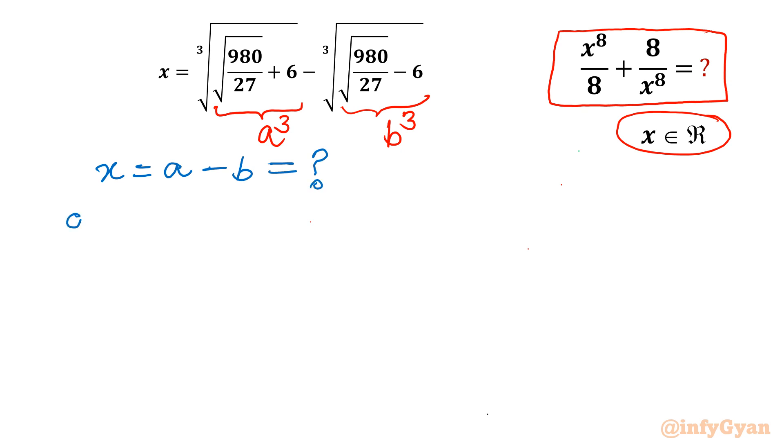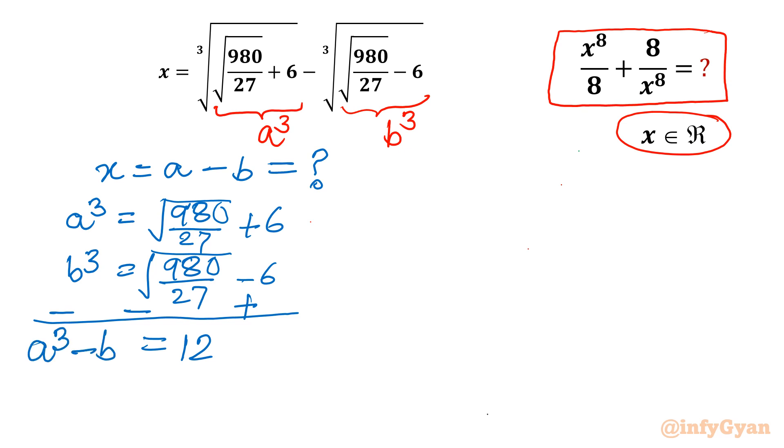Let's write our substitution separately. a cube equals square root 980 over 27 plus 6. b cube equals square root 980 over 27 minus 6. Simply take away the second equation from the first one with a change of sign. So right hand side square root terms will be over, 6 plus 6 is 12. Left hand side, a cube minus b cube. This is the most important equation in this solution context; let me call it equation 1.